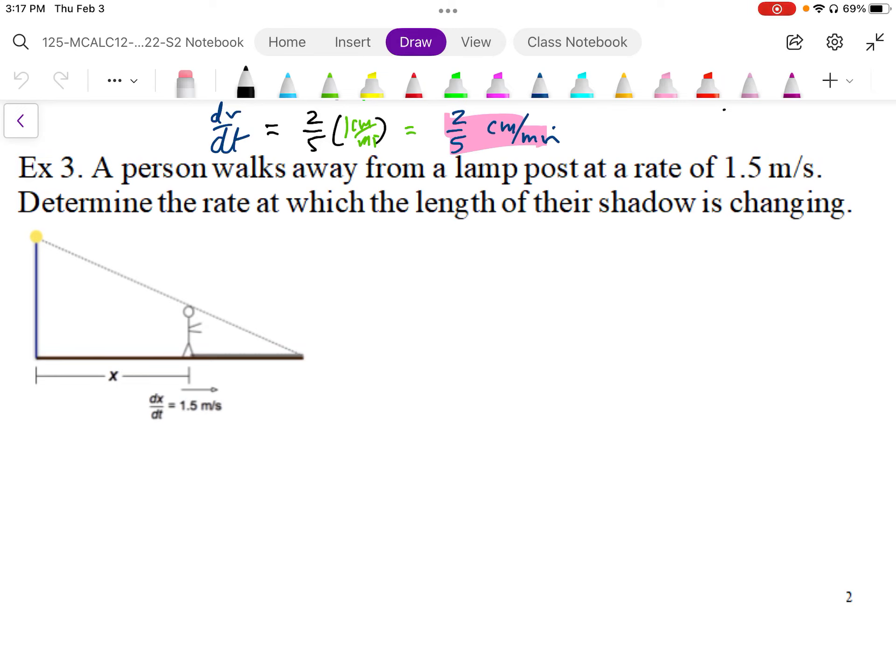And we want to know the rate at which the shadow is changing. So the shadow is this length here and we'll call that s. So that's the shadow. So we want to find ds by dt.